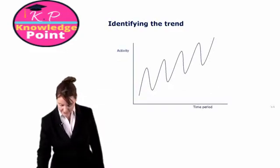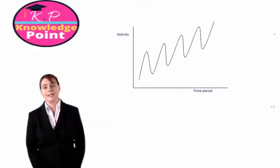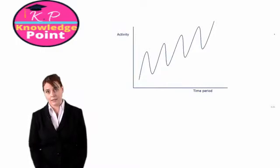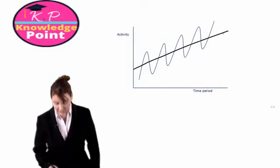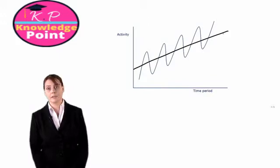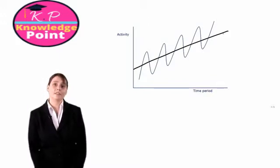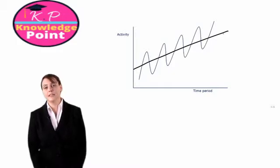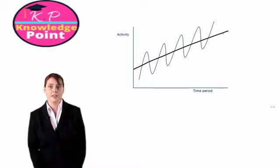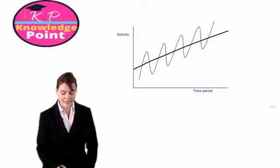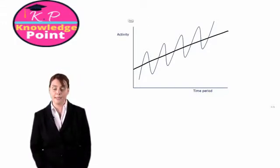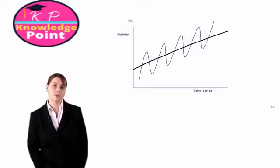We have our sales activity on the y-axis and our time period on the x-axis. We could simply look at the graph and use our eyes to establish what the line of best fit is. However, this is not particularly reliable because different people might draw the line of best fit in different places on the graph. So instead of drawing the line by eye, we can establish exactly where the line of best fit should be by calculating the centered moving averages.